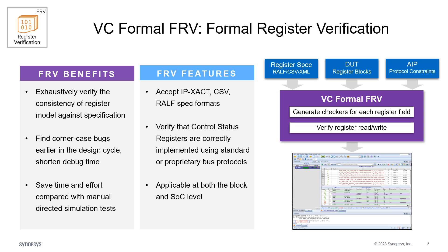In addition, to get good coverage results, users need to provide many directed tests. VC Formal FRV formally verifies if the control status registers can be properly accessed with the bus interface.